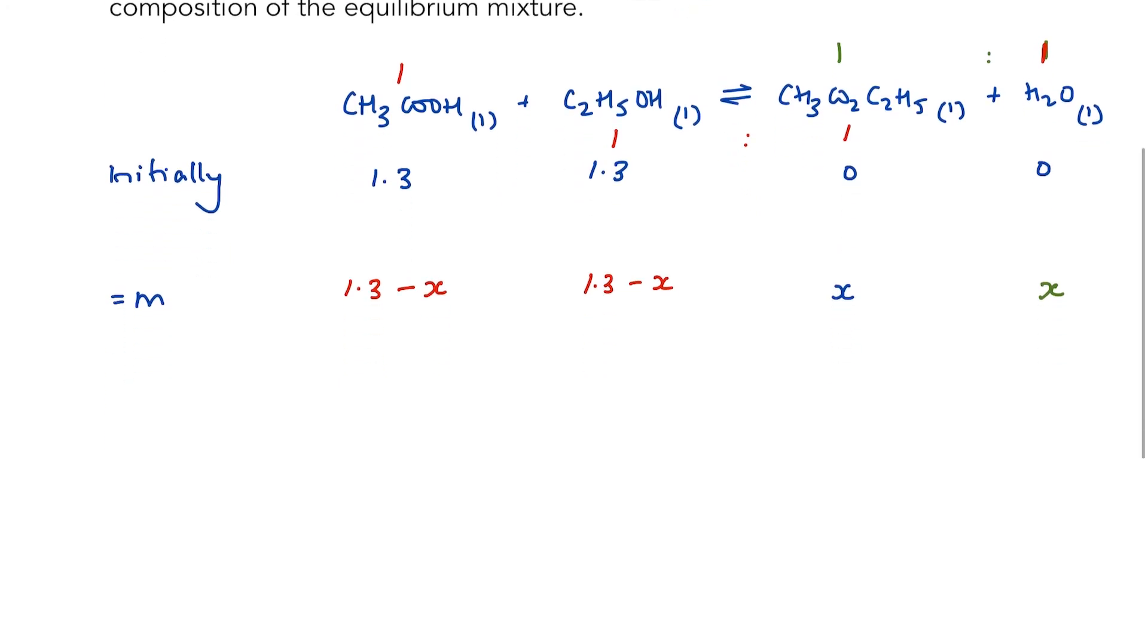Now we can write our expression for Kc. So Kc equals reactants over products. So CH3CO2C2H5, remembering state symbols and square brackets to denote concentration over our reactants. So we've got our acid and our alcohol.